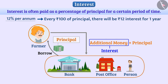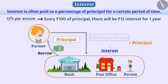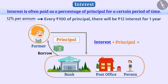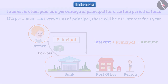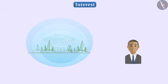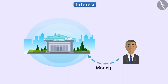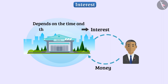The total amount to be returned by adding principal and interest is called amount. When we deposit money in the bank, the bank also gives us some interest on it, which depends on the time and the rate of interest.